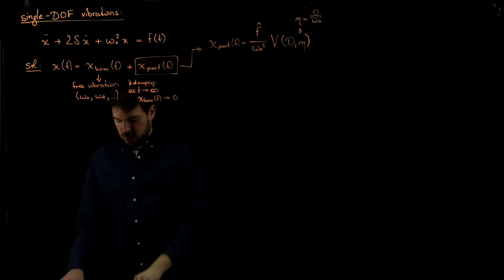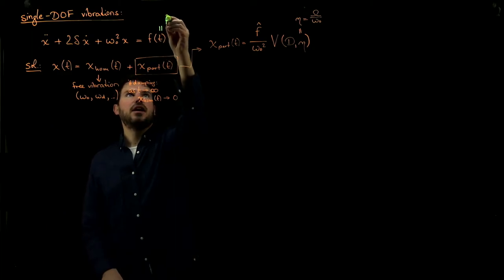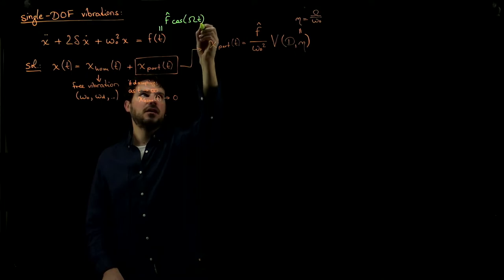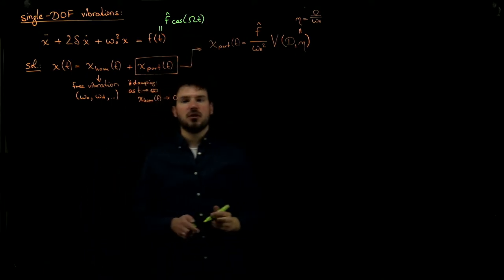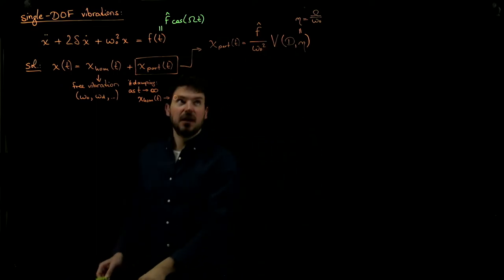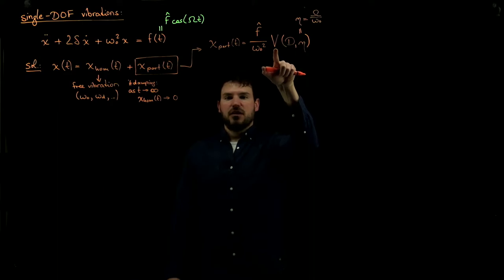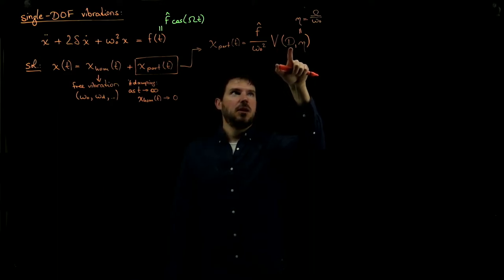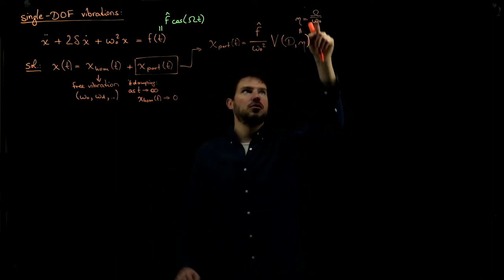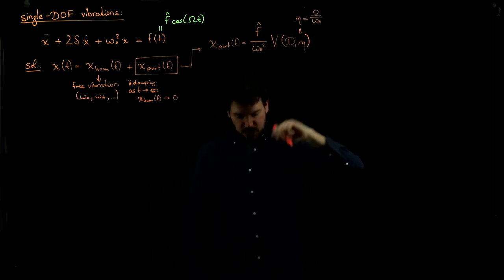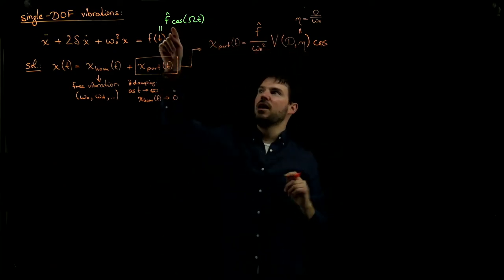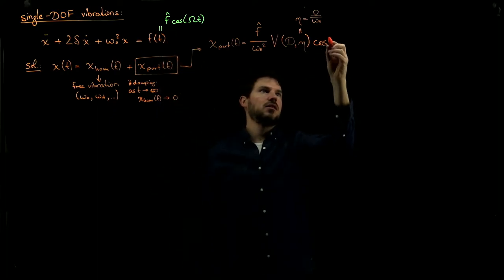The excitation was written as f-hat times cosine or sine of capital Omega t, and capital Omega is the excitation frequency. The first thing we see is that there is a magnification, and this magnification depends on the amount of damping and on the frequency at which you excite the system — it can be small or it can be huge. And if we excite with a cosine, we get a cosine out; if we excite with a sine, we get a sine out. We vibrate with the same frequency as the excitation.